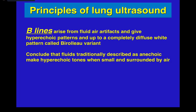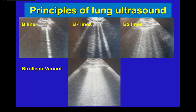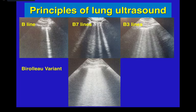The next thing to learn is B lines. B lines arise from fluid-air artifacts and give a hyperechoic pattern — up to a completely diffuse white pattern called a white lung variant. Fluids traditionally described as anechoic make hyperechoic tones when small and surrounded by air. Remember: one or two B lines may be normal, but the more B lines you see, the more abnormal the lung. B lines can appear in a large number of pathologies, and in almost all of them, more B lines means a more complicated problem.